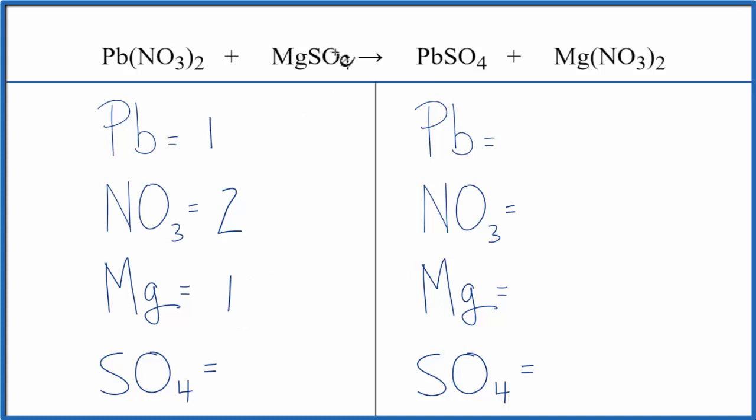One magnesium, SO4—we have it here and we have it here. It's called the sulfate ion, it's another polyatomic ion. So we're going to count one sulfate.